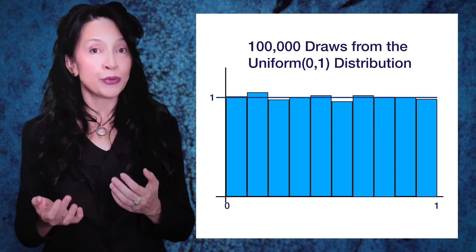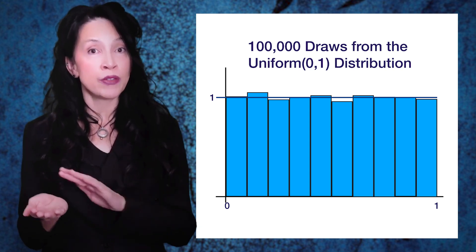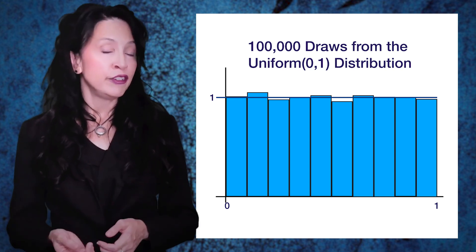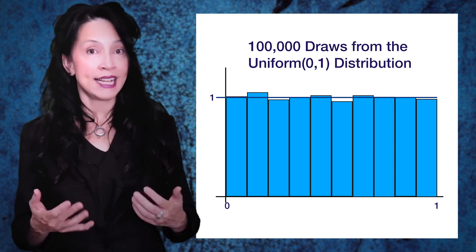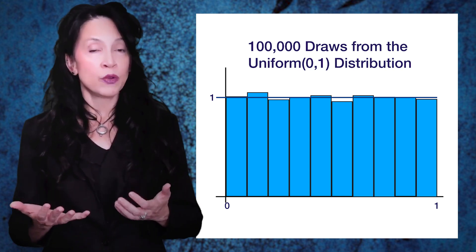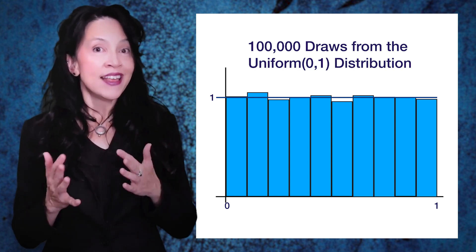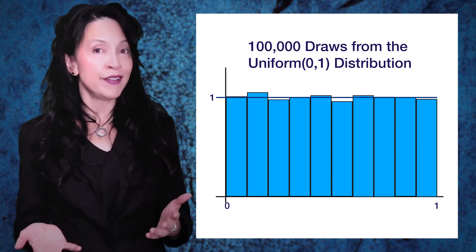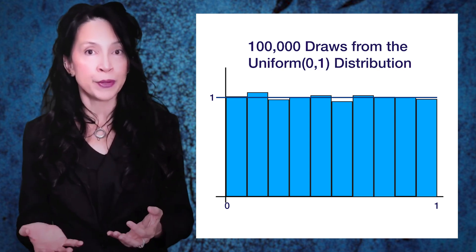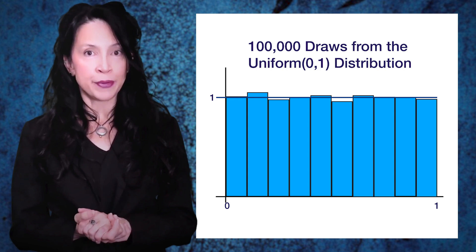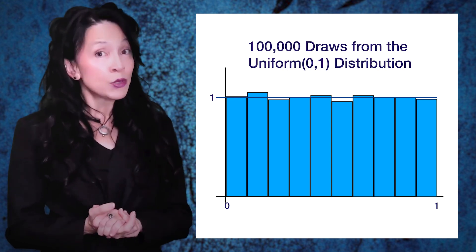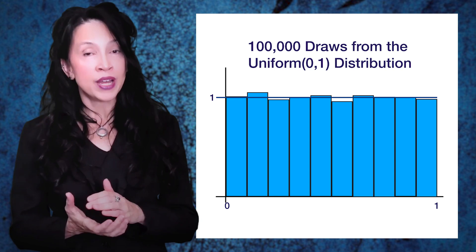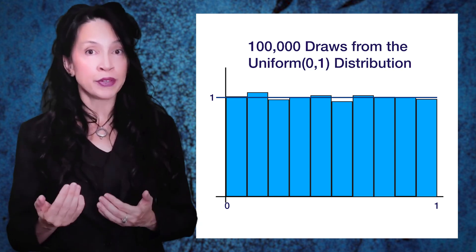So is this a problem with the underlying random number generator, or is this just sampling variability? I've given the example at least three times of us trying to figure out whether or not a coin we have is fair by flipping it. If we flip it three times and see heads, heads, tails, I don't think we're going to jump to the conclusion that the probability of getting heads is two-thirds and the coin is unfair — that's a very small sample. We want to get a larger sample.